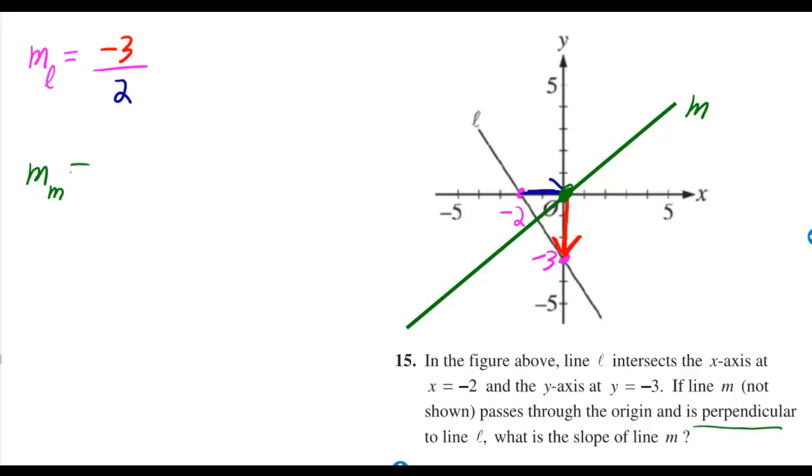The fact that it's perpendicular means we can already tell that the slope is just going to be the negative reciprocal of negative 3 over 2. The negative reciprocal of negative 3 over 2 is positive 2 over 3.